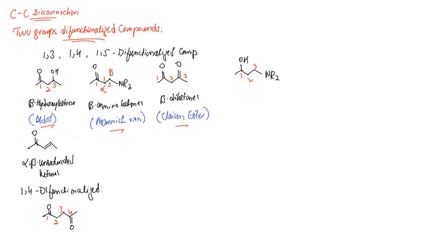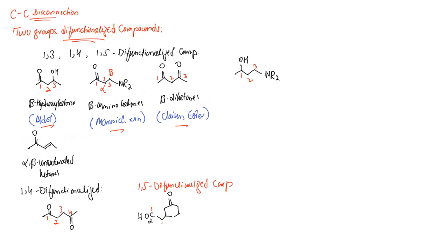The third type are compounds known as 1,5 difunctionalized compounds. Assigning numbers — 1, 2, 3, 4, and 5 — this type of compound is known as a 1,5 difunctionalized organic compound. These compounds are usually obtained through Michael addition.